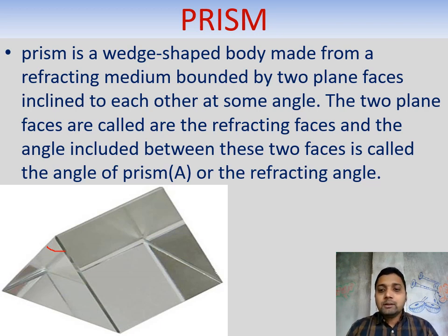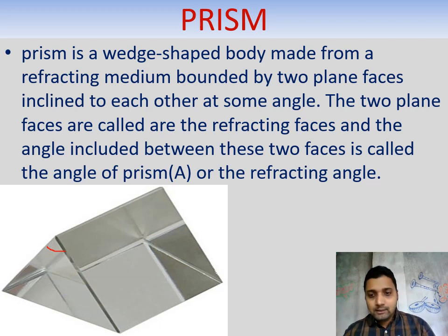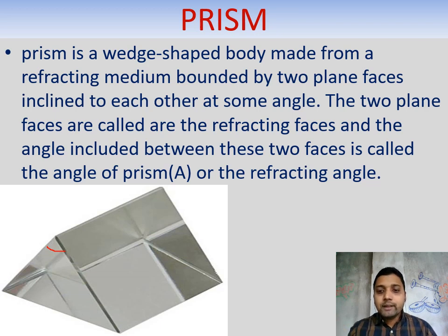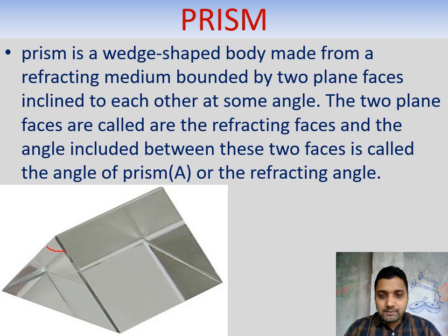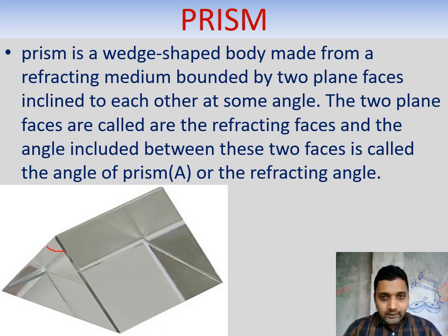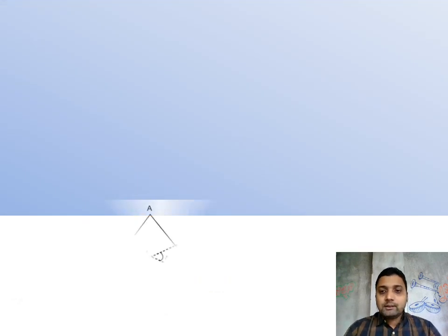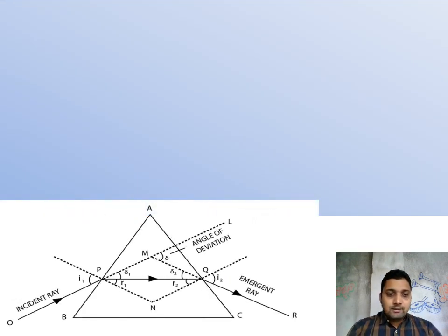When we read about the prism, a ray of light will hit the prism, and we want to know where it goes, what changes occur, and how many degrees it will deviate. To understand all aspects of this prism, we take a two-dimensional triangular face of the prism.